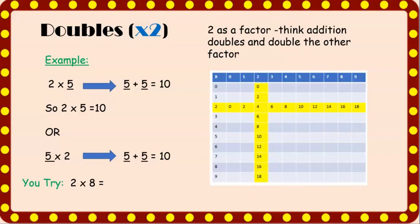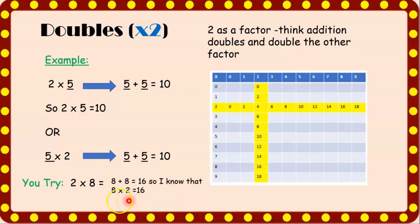Now it's your turn to try. We have the problem two times eight. Don't forget — when the factor is two, you double the other factor. If you said 16, you're correct. Eight times two is 16 because when you double the other factor, eight plus eight is 16.